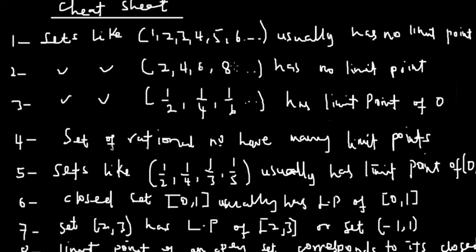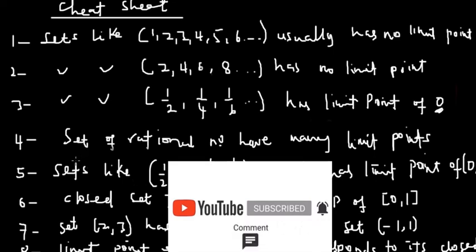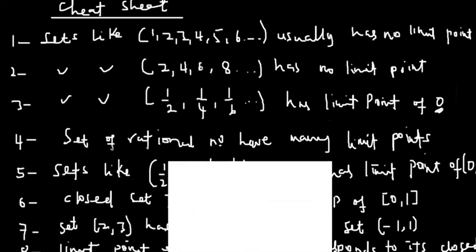Counting numbers do not have limit points. Even numbers are similar to counting numbers — they also do not have limit points. For fractions like 1/2, 1/4, 1/6 — sets in the form 1/2, 1/6, 1/8, 1/10 — they all have a limit point of zero.